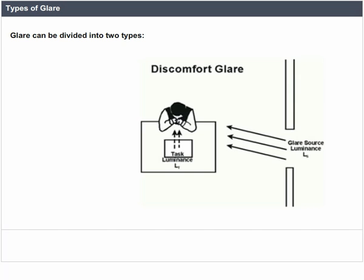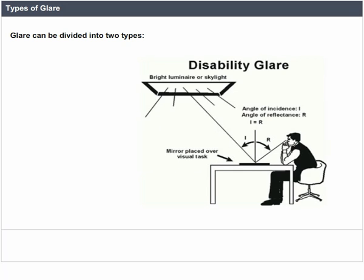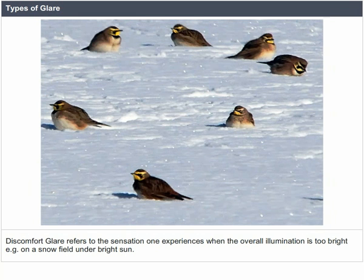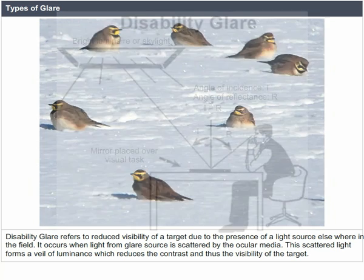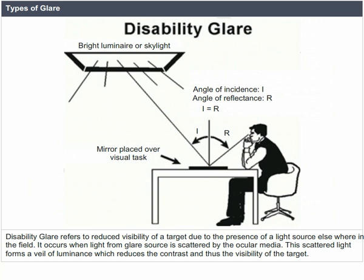Glare can be divided into two types: discomfort glare and disability glare. Discomfort glare refers to the sensation one experiences when the overall illumination is too bright — for example, on a snow field under bright sun. Disability glare refers to reduced visibility of a target due to the presence of a light source elsewhere in the field. It occurs when light from the glare source is scattered by the ocular media, forming a veil of luminance which reduces the contrast and visibility of the target.